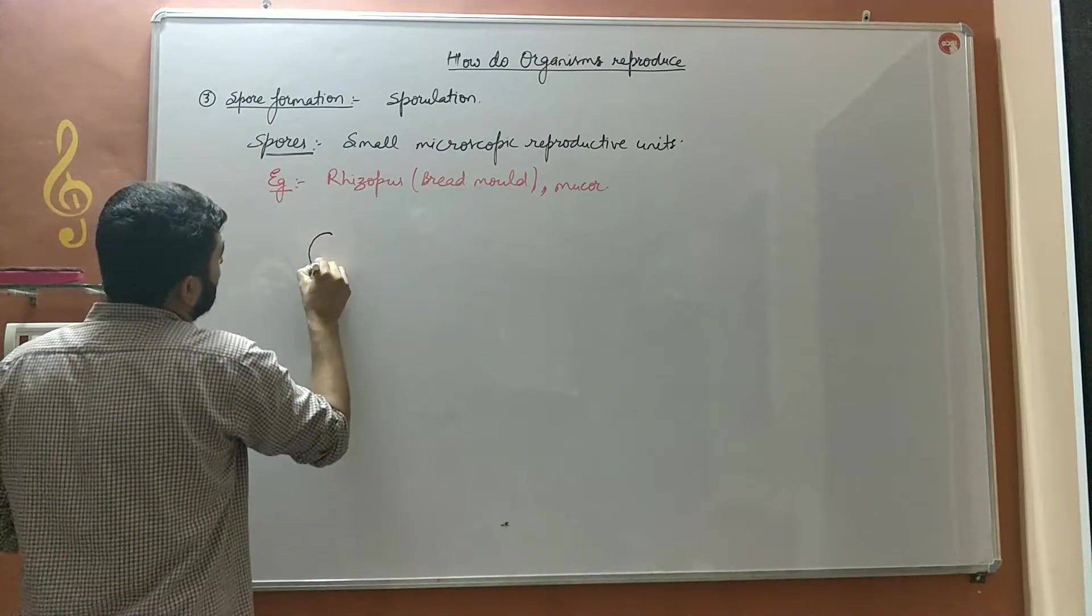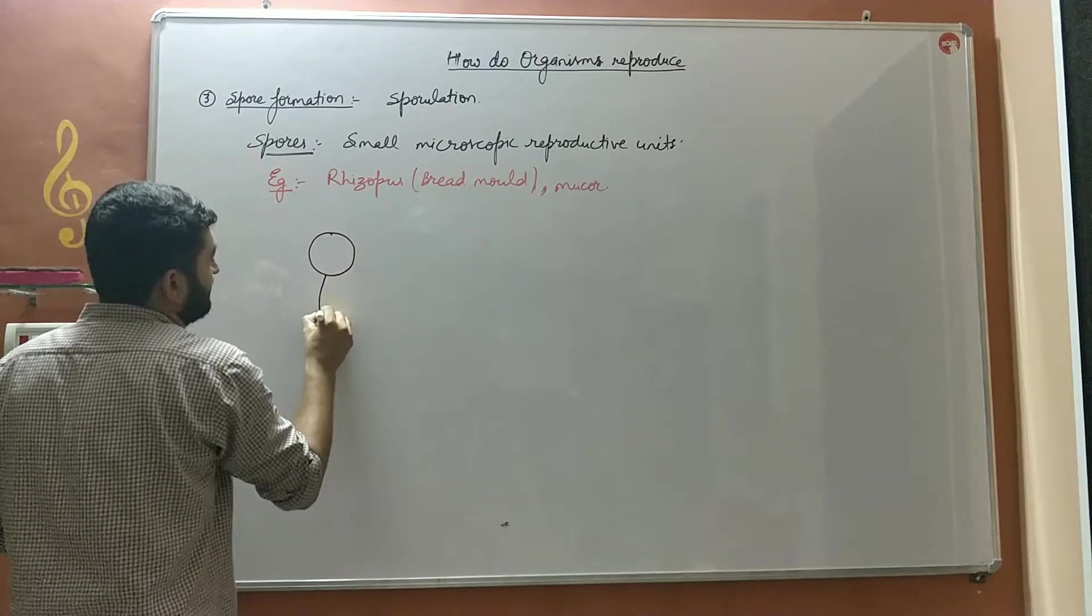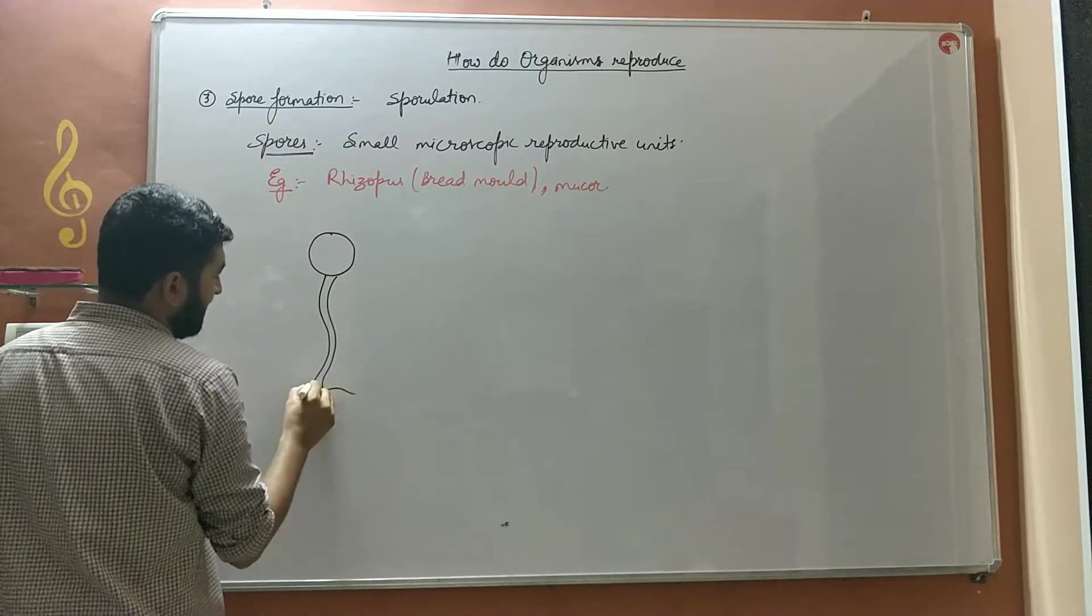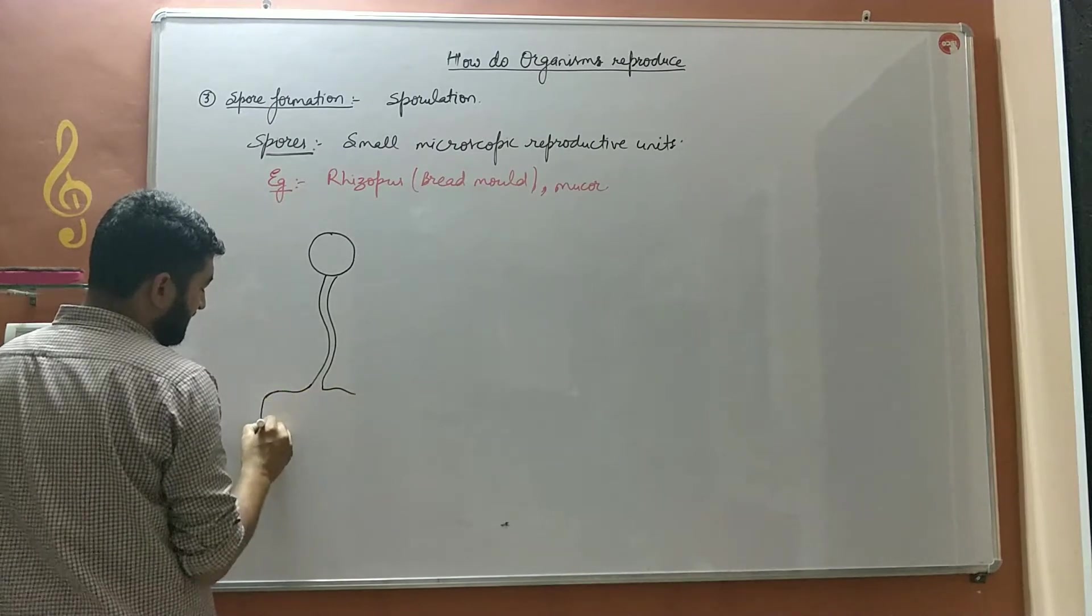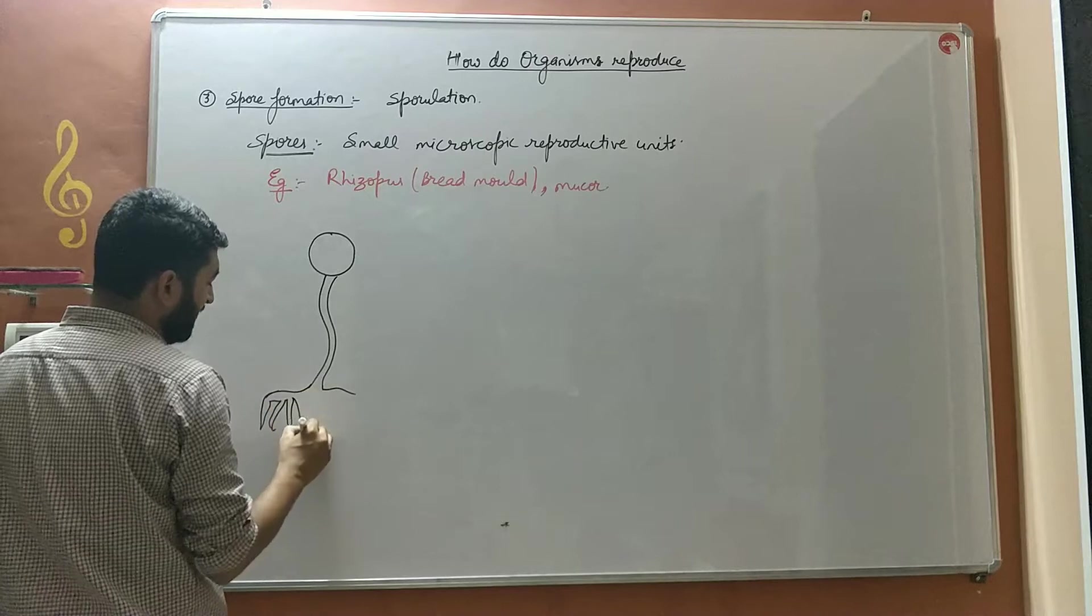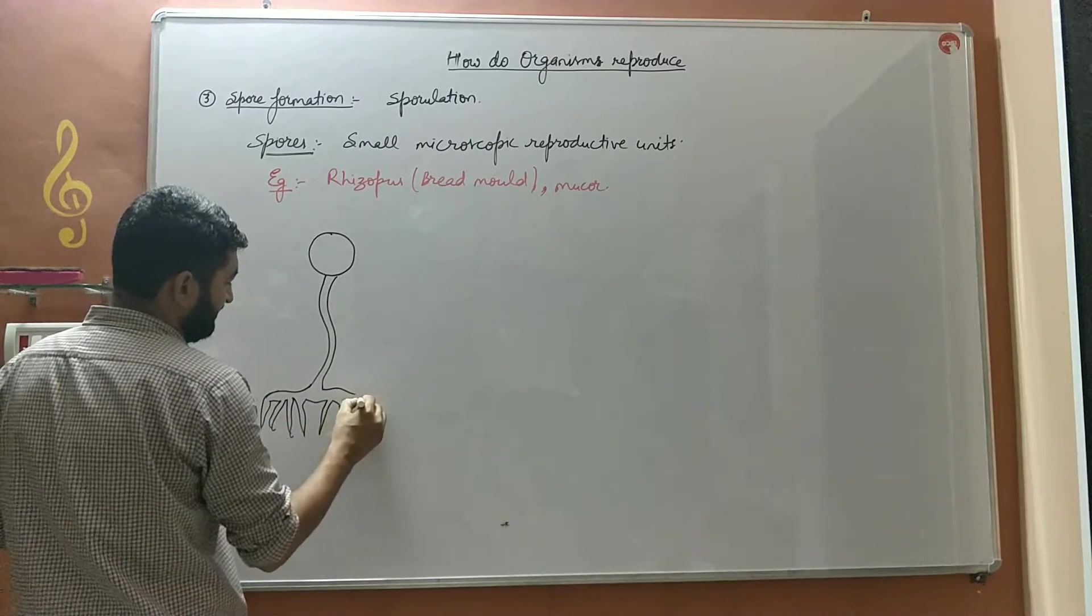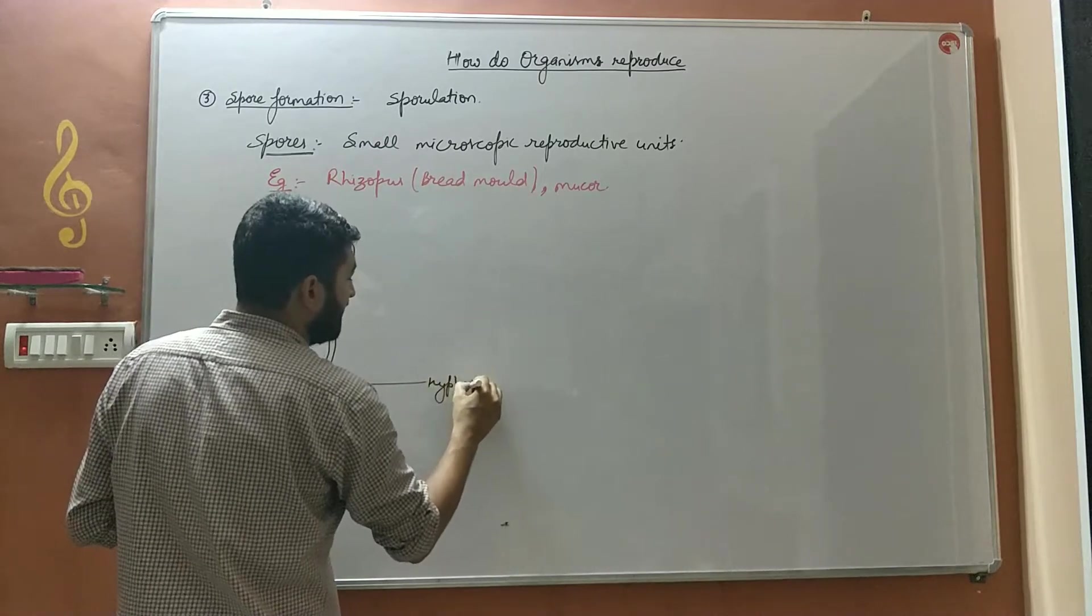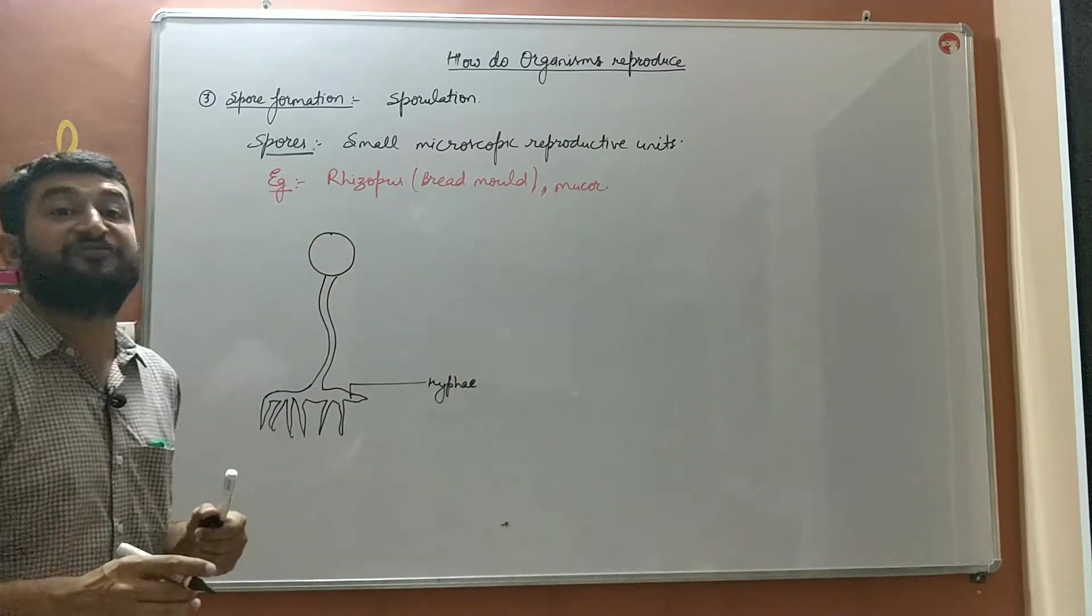These spores are present in a small blob-like structure which lies over a filament and has an aerial or dual-like structure known as hypha. These are known as hyphae. Hyphae is plural, hypha is singular.